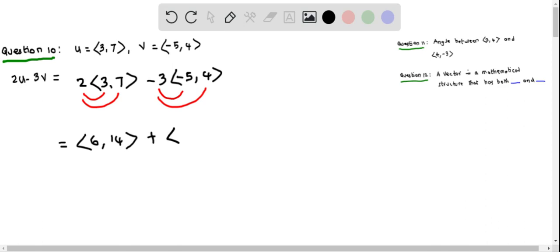When you multiply -3 with -5, we get 15, and -3 times 4 is -12. Now we have to add these two vectors by adding the corresponding numbers. So 6 should be added with 14.